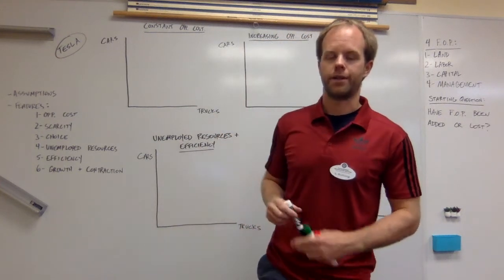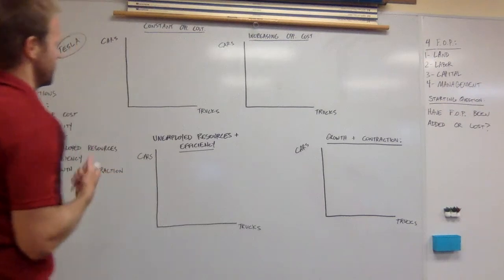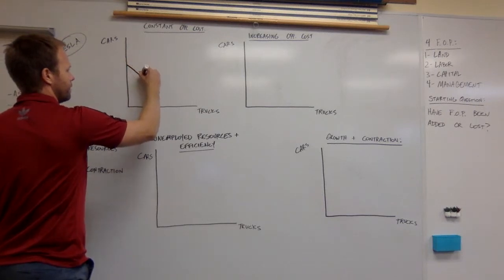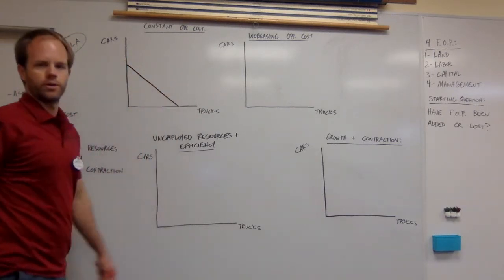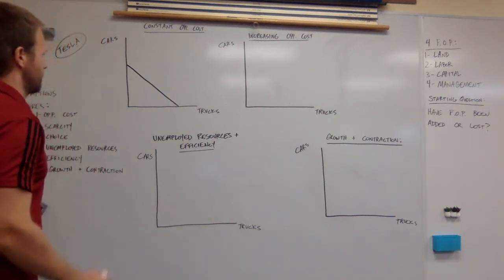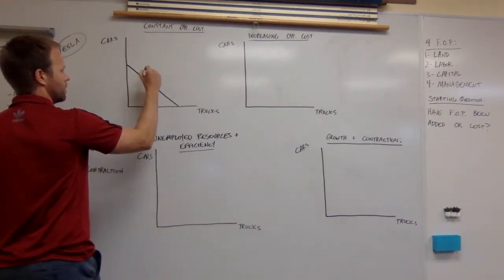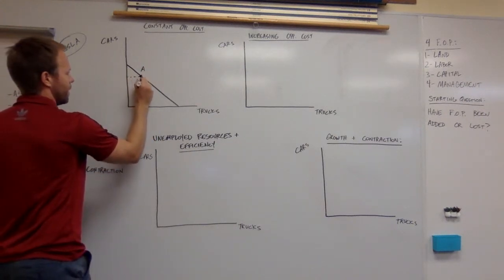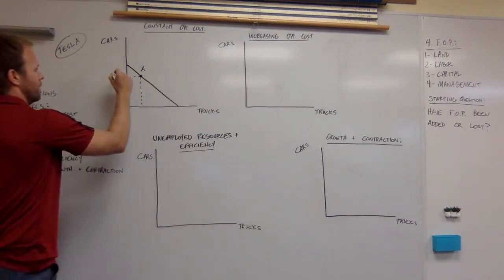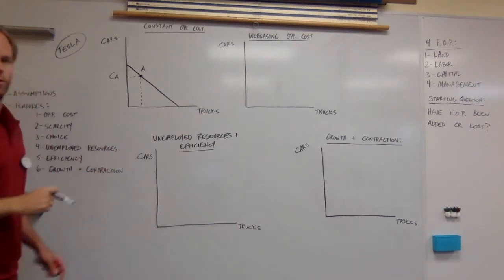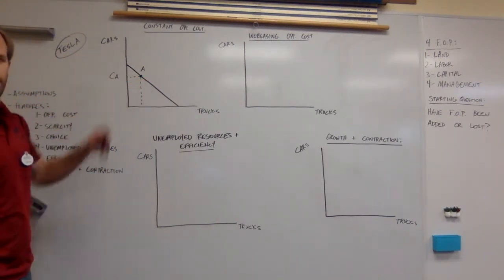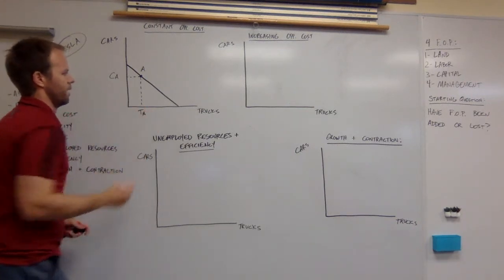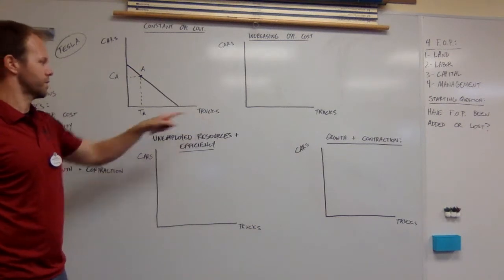Let's start off with the constant opportunity cost. You're going to show this with not a curve, but kind of like a 45 degree downward sloping line. Let's start with point A here. We're going to label that point A, and then we're going to connect the dots to each axis. We're going to label this point CA, the amount of cars produced at point A, and then we're going to label this TA as in the number of Tesla trucks produced at point A.